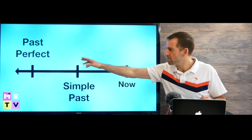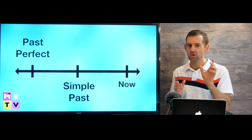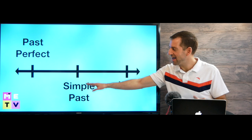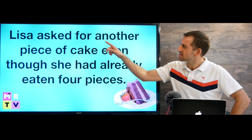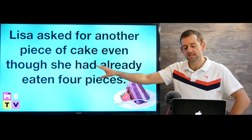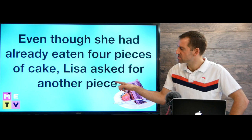In a sentence, you can choose which piece you want to have first. You could have the simple past first and the past perfect second, or the past perfect first and the simple past second — it's your choice. For example: 'Lisa asked for another piece of cake, even though she had already eaten four pieces' — simple past first, past perfect second. Or we could switch it: 'Even though she had already eaten four pieces of cake, Lisa asked for another piece' — past perfect first, then simple past.